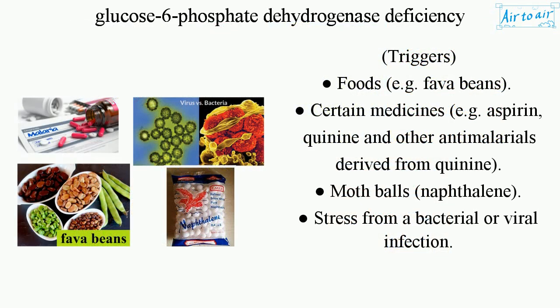Triggers include certain foods, e.g. fava beans; certain medicines, e.g. aspirin, quinine, and other anti-malarials derived from quinine; mothballs and naphthalene; and stress from a bacterial or viral infection.